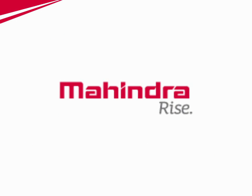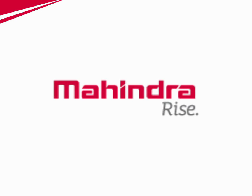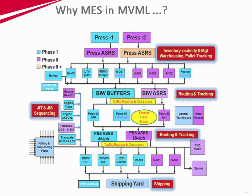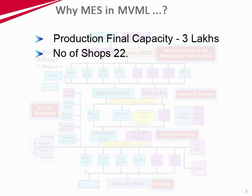MVML is a pioneer in deploying the largest MES solution in India. A common press and paint shop for four BIWs and three TCFs entailed integration of all shops in MVML. MVML Chakan is annually producing 1.8 lakh vehicles and engines.